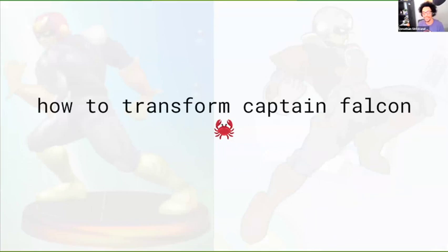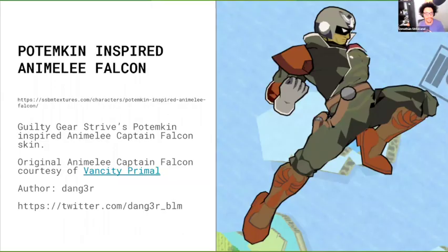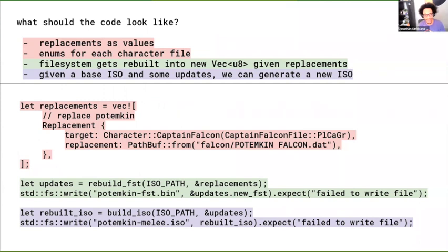Knowing all this, we know how we can look up and find something. But what if we change what was there? So we're going to transform Captain Falcon with Rust. We're going to be using this costume — it's the animele-inspired Potemkin Captain Falcon; the artist is Danger. I was thinking about what the code would look like: I wanted to have replacements as values that we pass around as a type, an enumeration for each character file so you can only replace valid characters, and a vector of U8s for passing things around. If we have an ISO and we have some updates, we should be able to build a new ISO with those replacements in place.